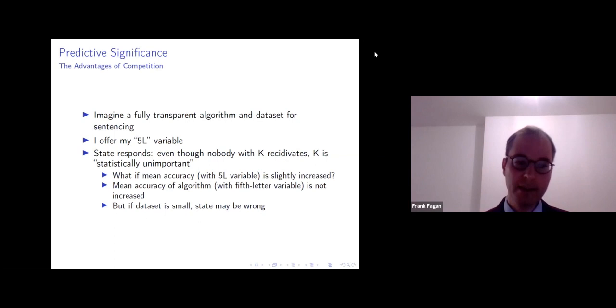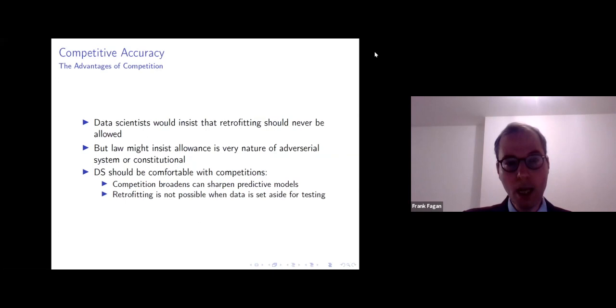And when we talk about prediction, it's a little bit different from causal inference. In predictive inference, we're more concerned with regularization and statistical importance. And there's several techniques, but perhaps the most intuitive one is to measure the mean accuracy of an algorithm with and without a variable. So we might measure the accuracy of the Wisconsin algorithm with the fifth letter variable and see that the accuracy is just slightly increased. What then? Maybe when we include the fifth letter variable, there's no increase in accuracy at all. But again, if the data set is small, the state might just be wrong.